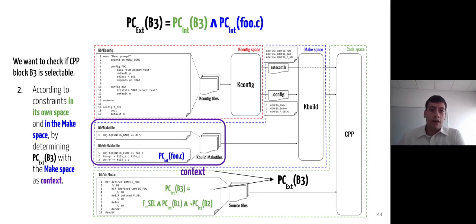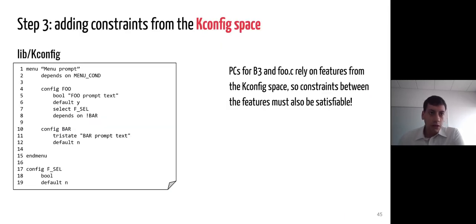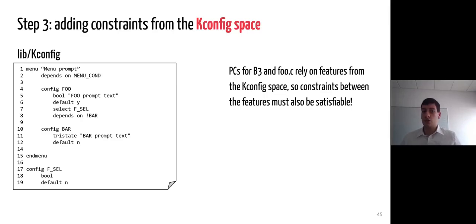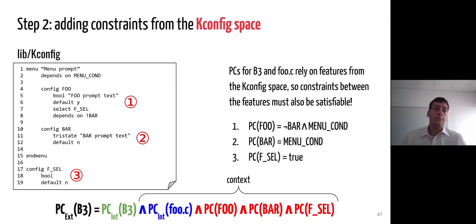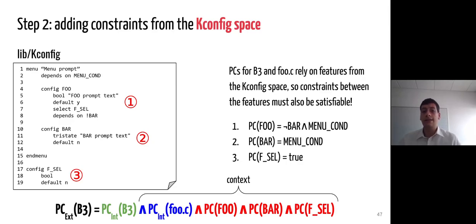Finally, we will add to this expression the constraints from the kconfig space. The presence conditions for B3 and foo.c rely on features from the kconfig space, so we need to check that these features are actually selectable, which is done by checking the presence condition for each feature. By conjoining these different presence conditions, we obtain the external presence condition of B3 using both make and kconfig spaces as context.